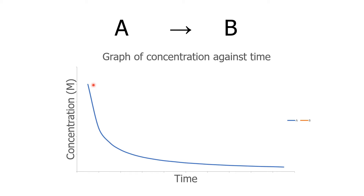Additionally, if we were to observe the change in concentration of B, which is the product, the concentration of B will increase until it reaches a maximum amount where the reaction stops.